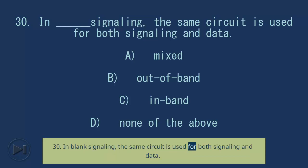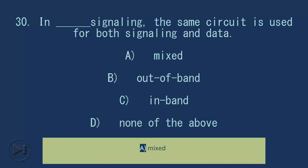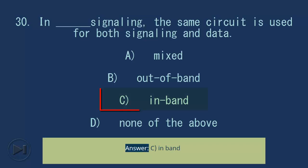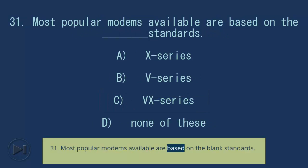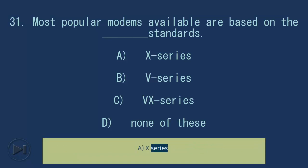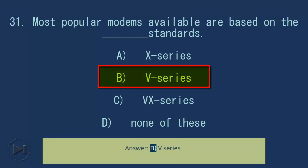Question 30: In blank signaling, the same circuit is used for both signaling and data. A. Mixed. B. Out-of-band. C. In-band. D. None of these. Answer: C. In-band. Question 31: Most popular modems available are based on the blank standards. A. X series. B. V series. C. VX series. D. None of these. Answer: B. V series.